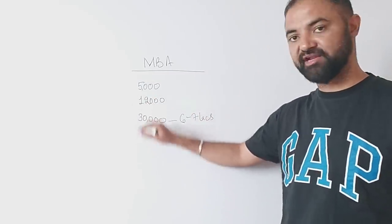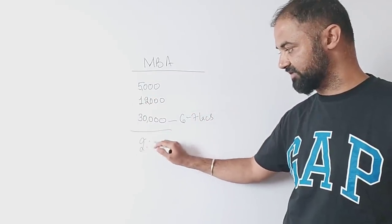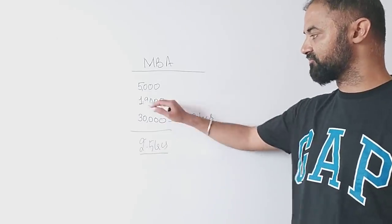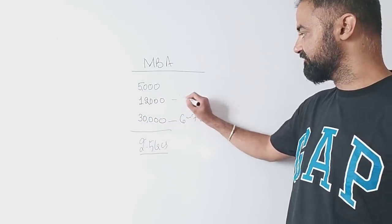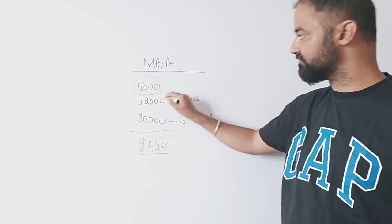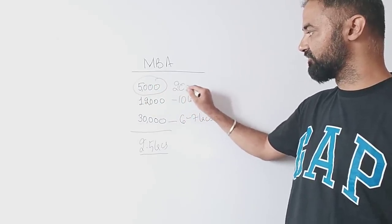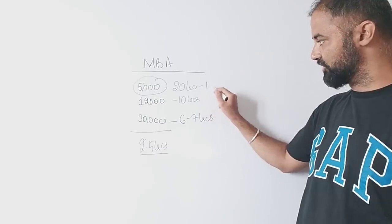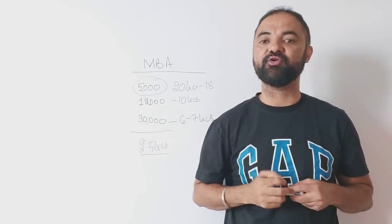12,000 people out of the total number of applicants, which will touch around 2.5 lakhs, will get a salary of 10 lakhs plus. And 5,000 people are going to get a salary of approximately 18 to 20 lakhs. Now that should be your target.